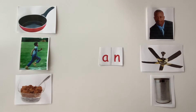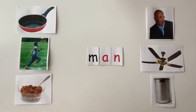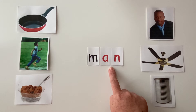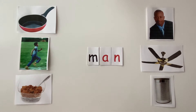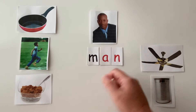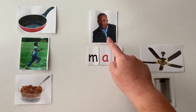Let's begin adding our beginning sound to the Ann family. If I add the letter M in front of Ann, what does that spell? Let's sound it out. M-Ann. Point to the picture that this word spells. If you chose man, you are correct. M-Ann is the word man. Good job.